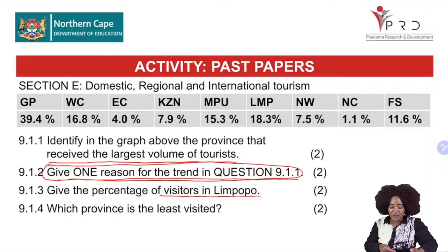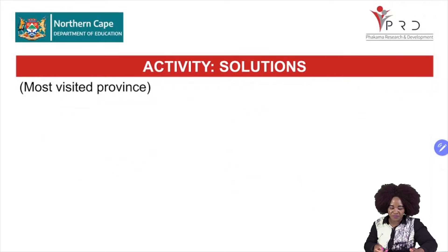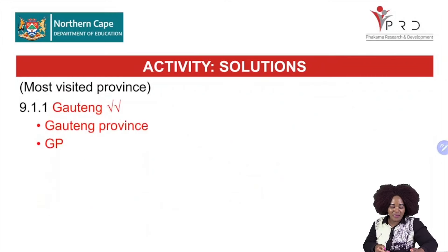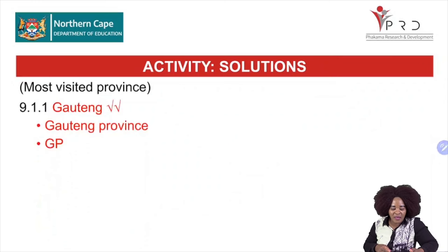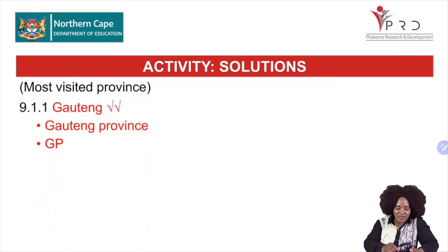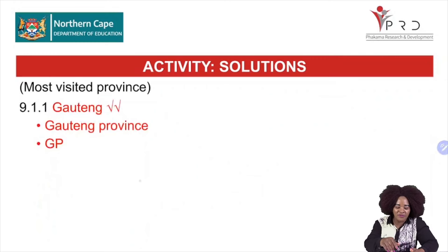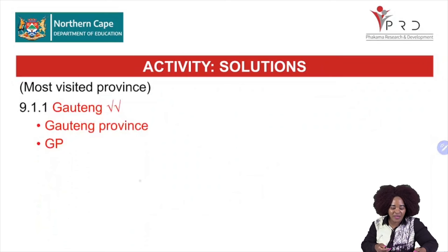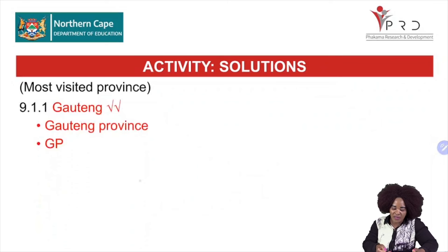Let's go to the solutions. In question 9.1.1, which province is the most visited? You've seen that it is Gauteng — it was the most visited province. If you write Gauteng, or GP, you are correct. That is the answer for 9.1.1 because the question was asking about the most visited province out of the nine provinces in that table.